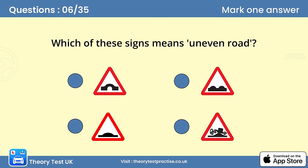Question 6. Which of these signs means uneven road? The answer is B. Some signs can look similar to others, but each one has a different meaning. For example, this one looks a little like the sign for a hump bridge. Learn the meaning of every sign to prepare yourself for how to react to them.